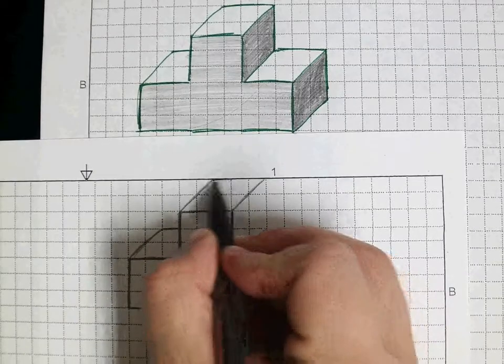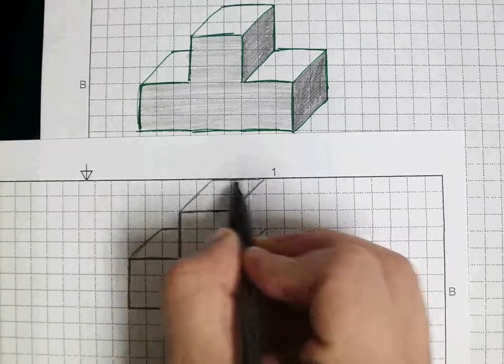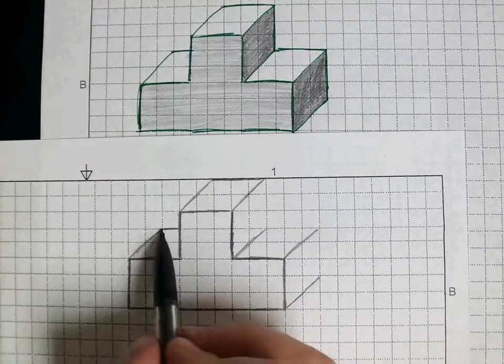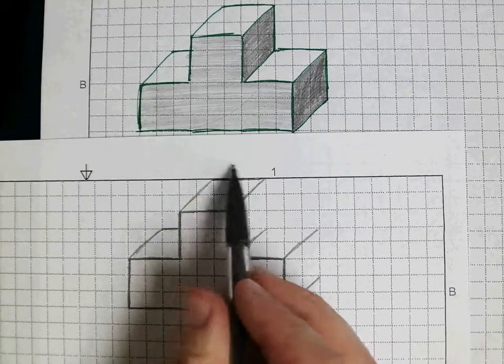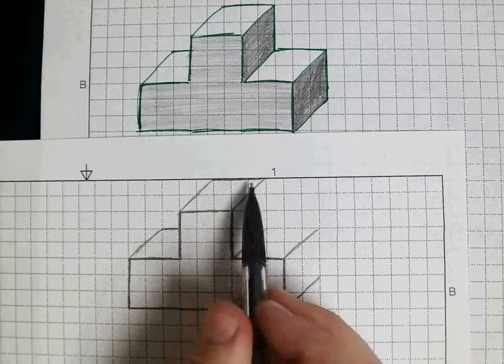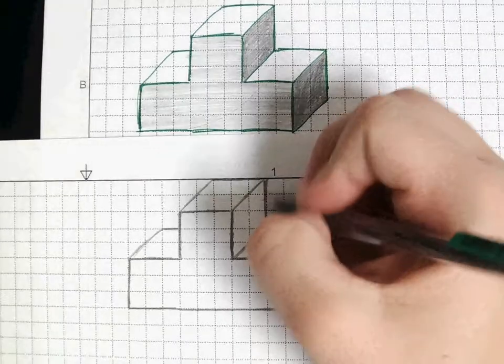And all we need to do is close these off. So we can go across on the grid lines again, across the top here. This one kind of nice, actually the top edge of our paper. For right now, we bring this one down, this one over, this one down.